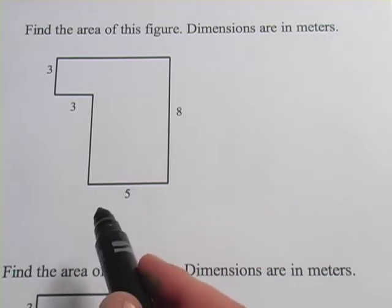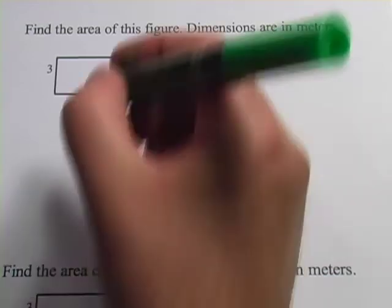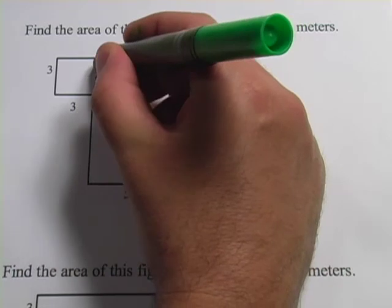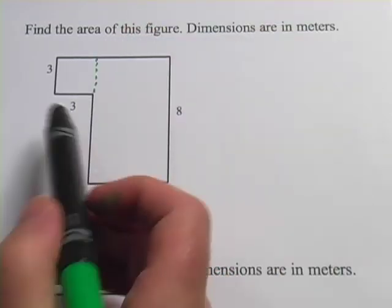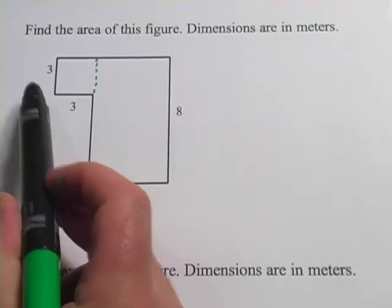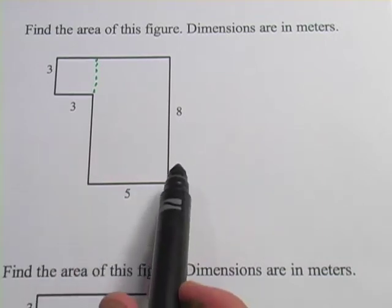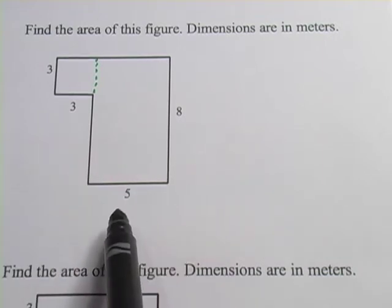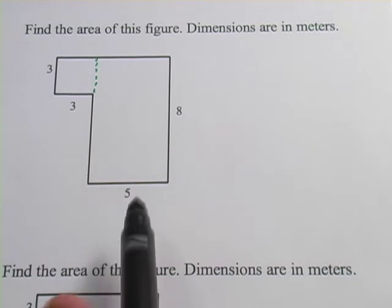Looking at this L-shaped figure, I would split it up into two pieces. This would be a square that's 3 by 3, and this would be a rectangle that's 5 by 8. I can find the area of those two pieces and add them together.